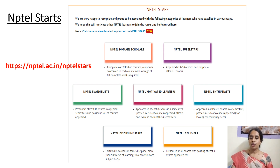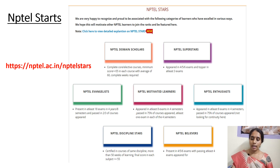Coming to the next category, NPTEL Superstars. In this, the student must appear for either 4, 5, or 6 exams and should be a topper in at least 3 exams. The student should pay and write 4, 5, or 6 exams, and among these, should be a topper in at least 3 of those particular courses. Then only they will be issued the NPTEL Superstars certificate.